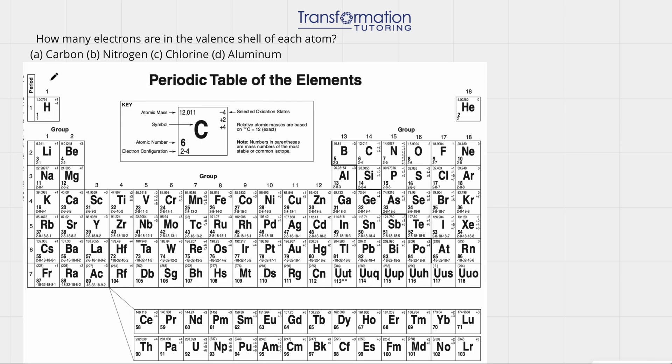If we're in group one, there is one valence electron. In group two, there are two valence electrons. In group 13, there will be three valence electrons.